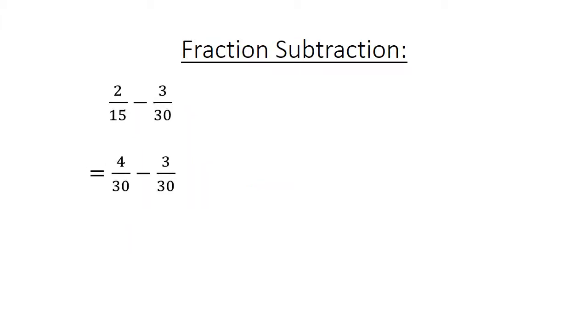Fraction subtraction: 2 over 15 minus 3 over 30. Find the lowest common multiple, 30: 4 over 30 minus 3 over 30 equals 1 over 30.